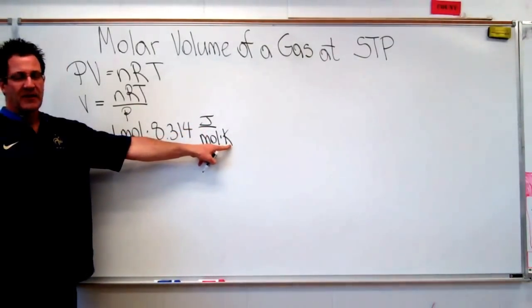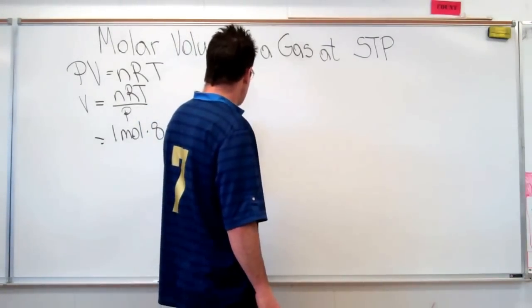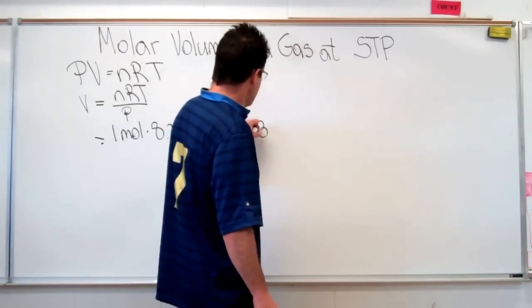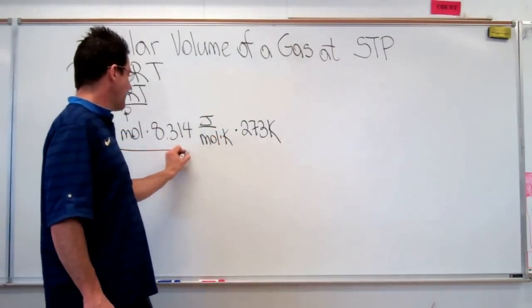So it's joules divided by mole Kelvin. And then we have our temperature, which we're going to put in. We have 273 Kelvin. And we're going to divide that by the pressure.